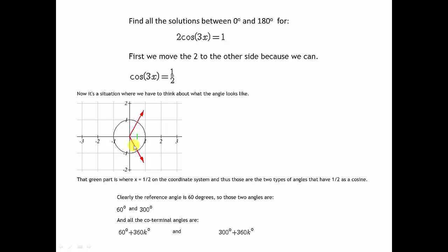And then we have to think about all the coterminal angles. I know we're only looking between 0 and 180, but you need to be careful when you're solving complicated trig functions. The fact that there's a 3 here makes it a little bit more complicated. Even if we're only looking between 0 and 180, we really need to think about looking at them all. So remember, this angle could be 60 degrees, or it could be 60 plus 360 degrees, or it could be 60 plus twice 360 degrees. That's why we have two different types of angles, 60 plus 360k and 300 plus 360k.